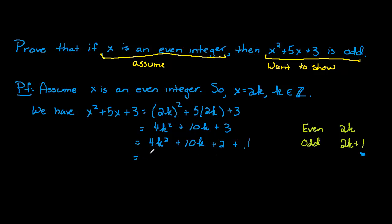And so let's keep going here. We could factor out a 2 as a common factor. So let's take out a common factor here from those terms. And if we do that, we have 2 parentheses, 2k squared plus 5k plus 1, close parentheses, and plus 1 hanging off the back end.